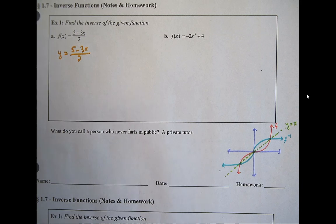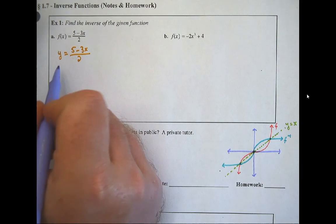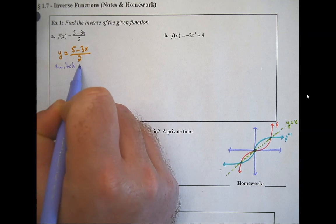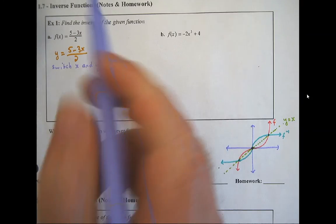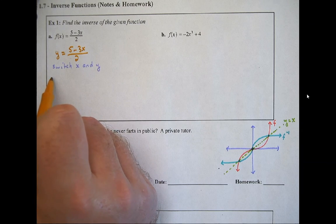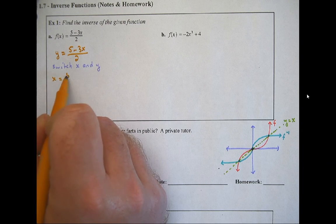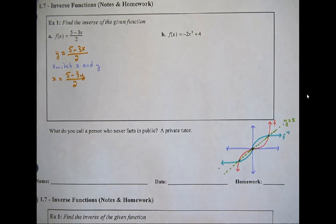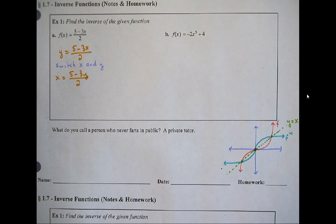Now I want to switch x and y. So now I would have x equals 5 minus 3y over 2. So technically, that is the inverse.